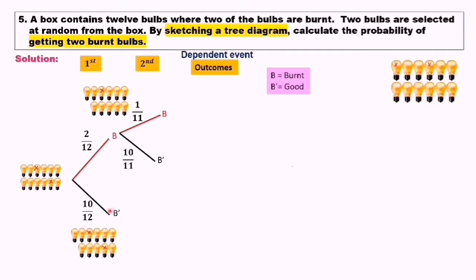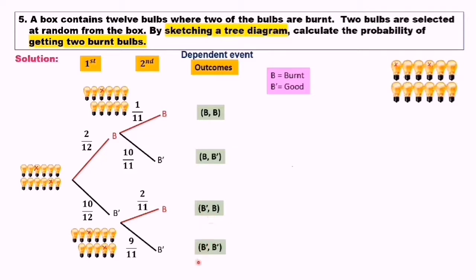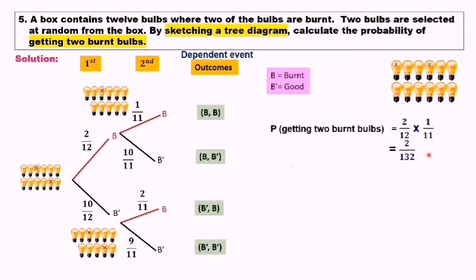If the first bulb selected is a good bulb, then 2 burnt and 9 good bulbs remain, giving P(burnt) = 2/11 and P(good) = 9/11. The four outcomes on the tree diagram are BB, BB', B'B, and B'B'. To find the probability of getting 2 burnt bulbs, we use the BB branch: 2/12 times 1/11 equals 2/132, which simplifies to 1 over 66.